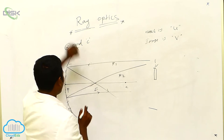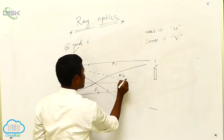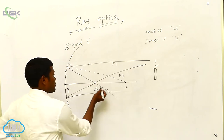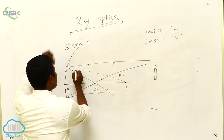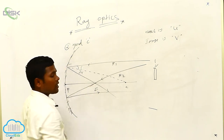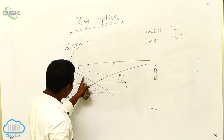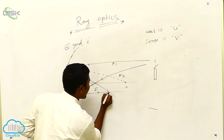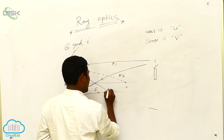Where is the normal line? Simply we can draw the normal line. This is the normal line. So, this angle we are calling the incident angle, and this angle we are calling the reflection angle. Where are we getting the image? Where this R ray and this R ray — where they are meeting? At this point we are meeting. So, here you are getting the image.